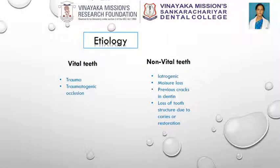Trauma is the most likely cause of vertical root fractures in vital teeth, typically occurring from physical trauma, clenching or bruxism, or occurring in teeth undergoing apexification. In non-vital teeth, root fractures are mainly iatrogenic, resulting from dental treatment excesses such as excessive canal shaping, excessive pressure during compaction of gutta-percha, excessive width and length of a post space in relation to tooth anatomy and morphology, or excessive pressure during placement of the post.